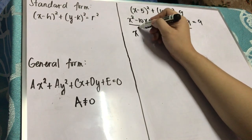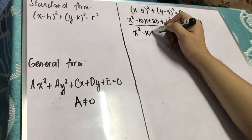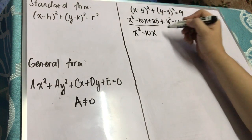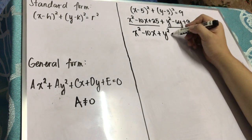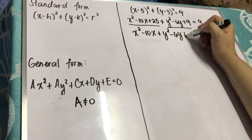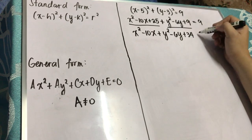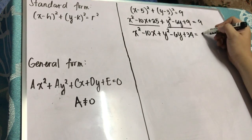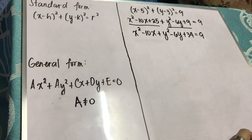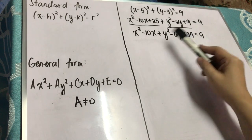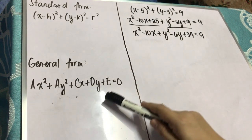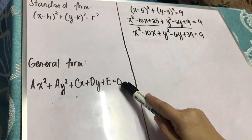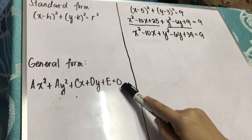Now simplify — combine the two constant terms on the left side of the equation. You have 25 plus 9, which is 34. So you have x squared minus 10x plus y squared minus 6y plus 34, is equal to 9.